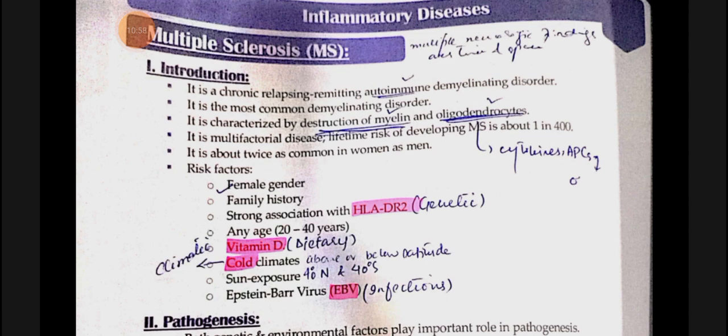Now we start multiple sclerosis. The key concept: nerves are covered by myelin sheath, which speeds up nerve conduction. In multiple sclerosis, autoimmunity develops against the myelin sheath. It is a chronic, relapsing-remitting disease — sometimes better, sometimes worse — cycling back and forth. It is a chronic relapsing-remitting autoimmune demyelinating disorder.